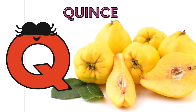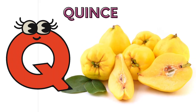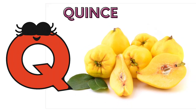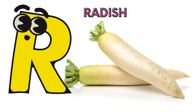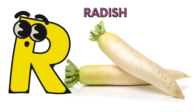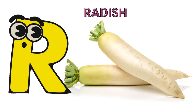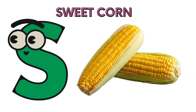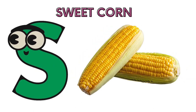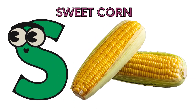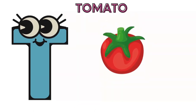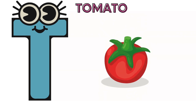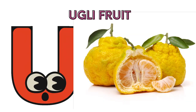Q is for quince, quince. R is for radish, radish. S is for sweet corn, sweet corn. T is for tomato, tomato.